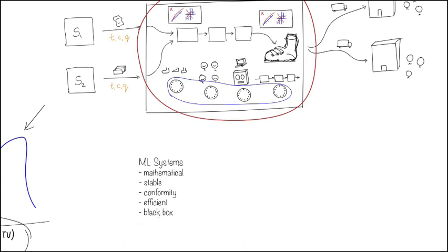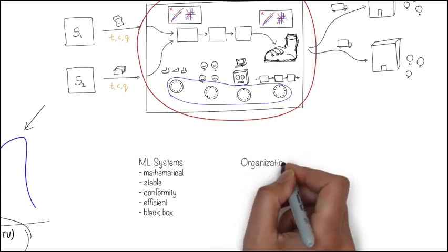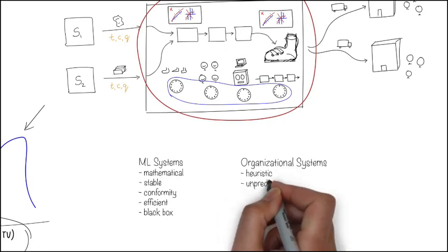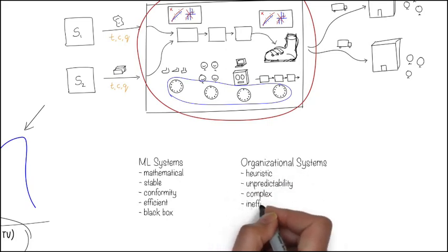The organizational system, on the other hand, has a lot of heuristics, can exhibit unpredictable behavior, is more complex, is usually inefficient, is mostly a white box where you need to understand how things work.